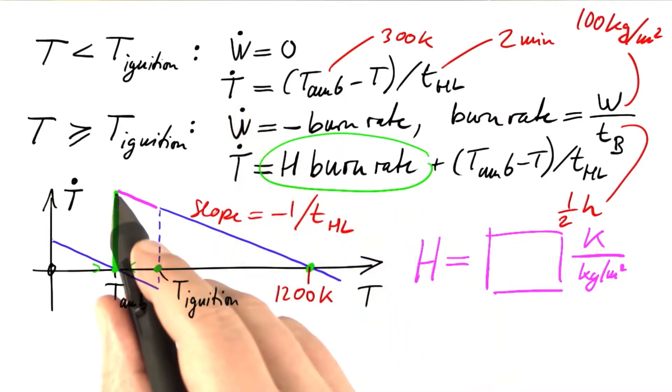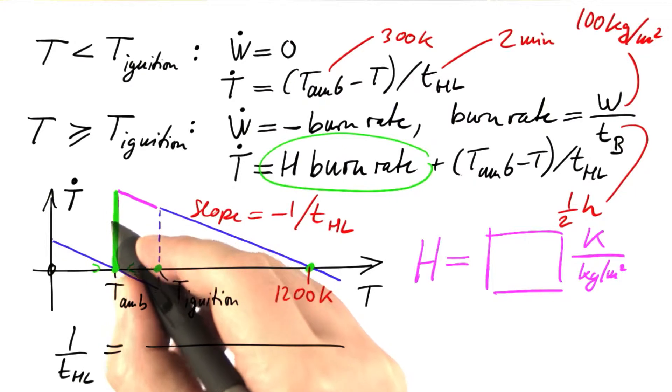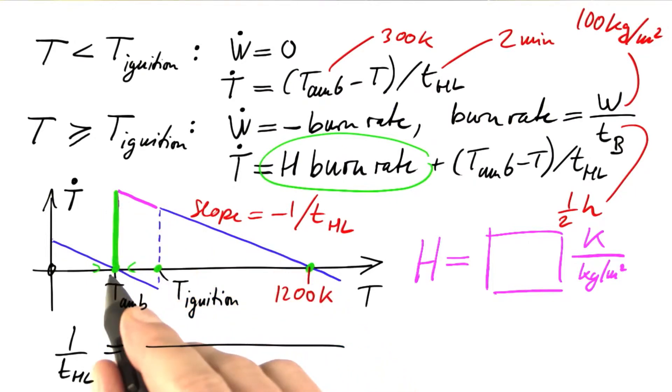And now we can use the slope to express the ratio of this lag to this lag. 1 over the time constant for the heat loss equals the ratio of the vertical length to the horizontal length.